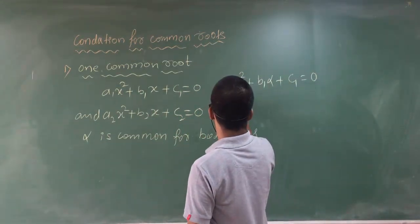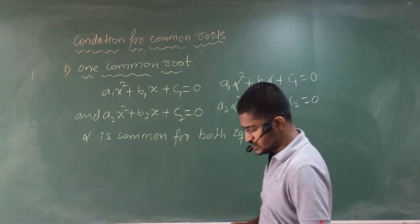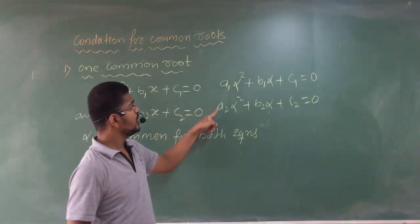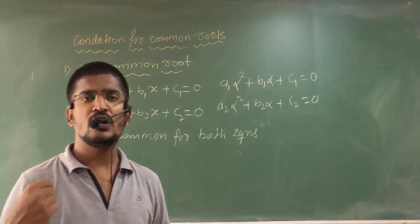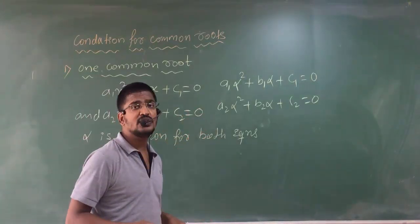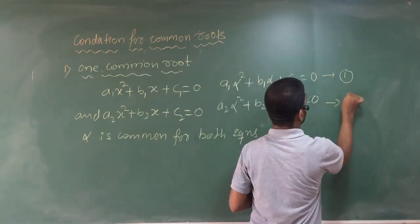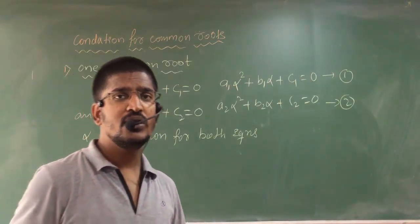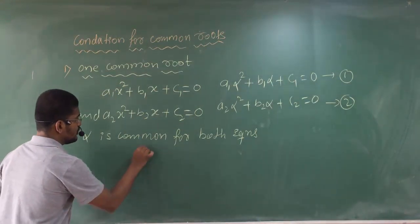If alpha is common for both equations, substituting it gives: a1·α² + b1·α + c1 = 0 and a2·α² + b2·α + c2 = 0. These are the two equations we get by using the common root alpha. Now let us simplify these two equations to find what alpha is.